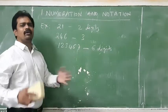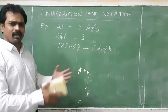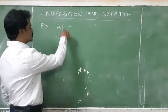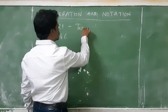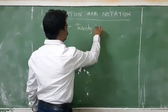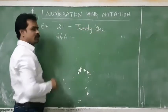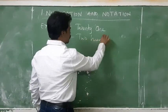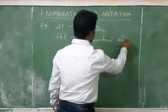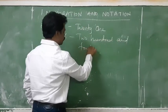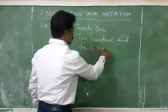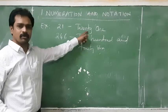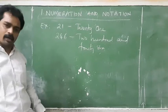Number writing and number name. Number and number name — it is also very easy. Number name means twenty-one, that is the number name. Writing in words is called the number name. I have written number name: two hundred and forty-six. Writing in words is called number name.